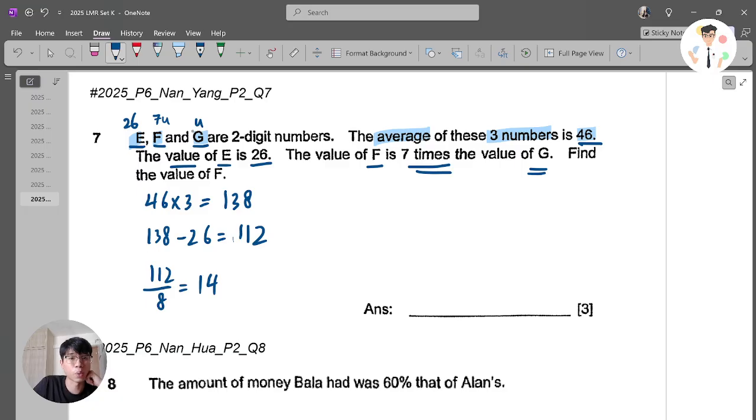So 112, if I divide by 8, I know 1 unit is actually 14. And 14 is actually 1 unit. And now I need to look for F. So I just use 14 times 7, which is 98. That is my answer.